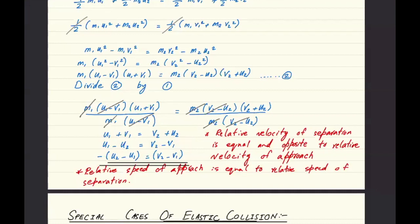And if you use the term speed instead of velocity, then you don't have to say opposite, because speed doesn't carry any direction. So either you would say relative velocity of approach is equal and opposite to relative velocity of separation, or you can say relative speed of approach is equal to relative speed of separation.